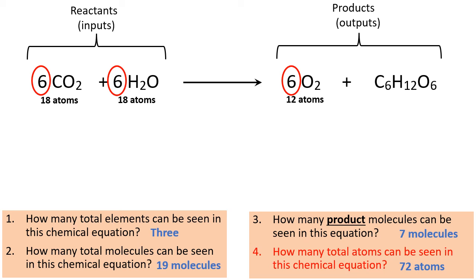And then when we look at the glucose, the C6H12O6, you can see that there are 24 atoms in that one molecule. There are six carbon atoms, 12 hydrogen atoms, and six oxygen atoms. So that adds up to 24 total atoms. And so that's how we got the 72 atoms. Just add up the 18 plus 18 plus 12 plus 24 for 72 atoms.